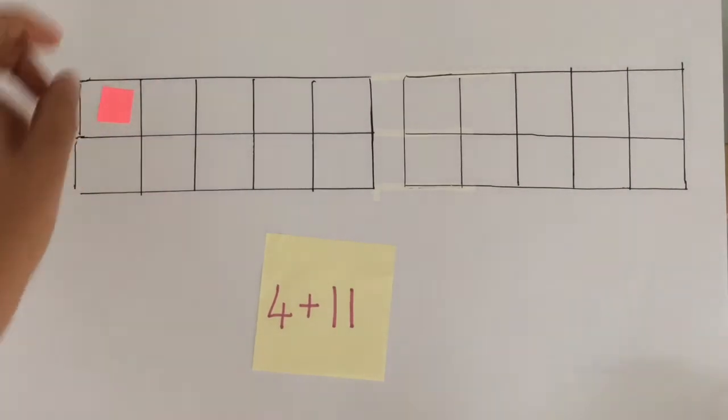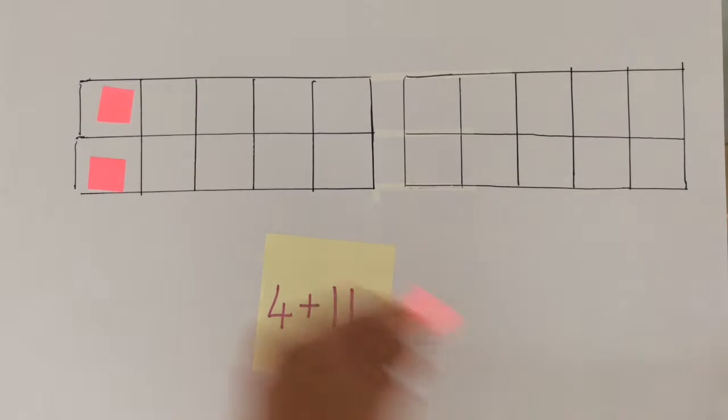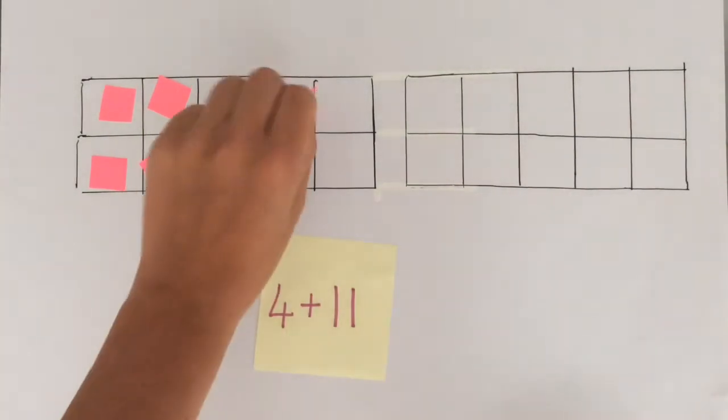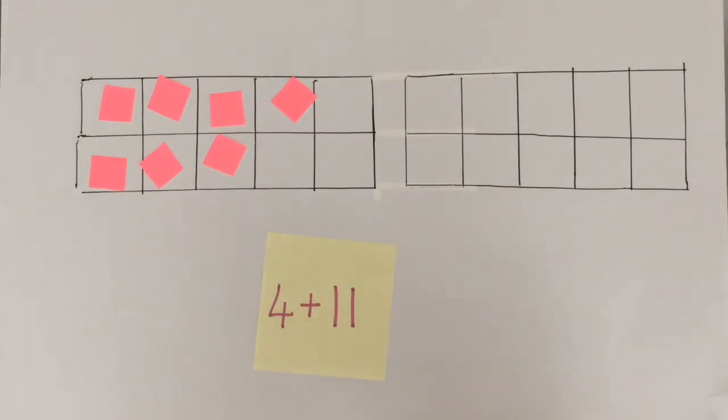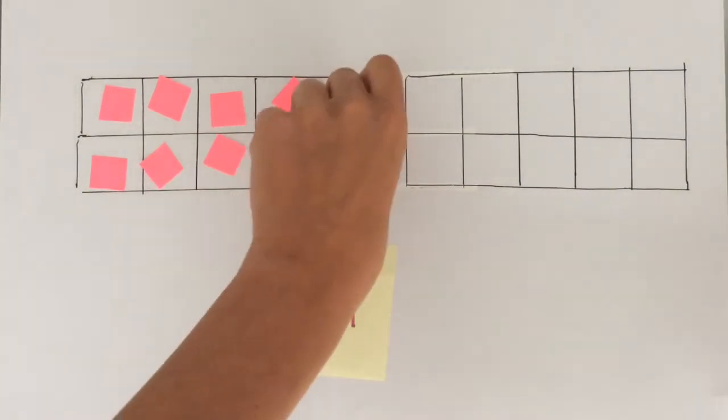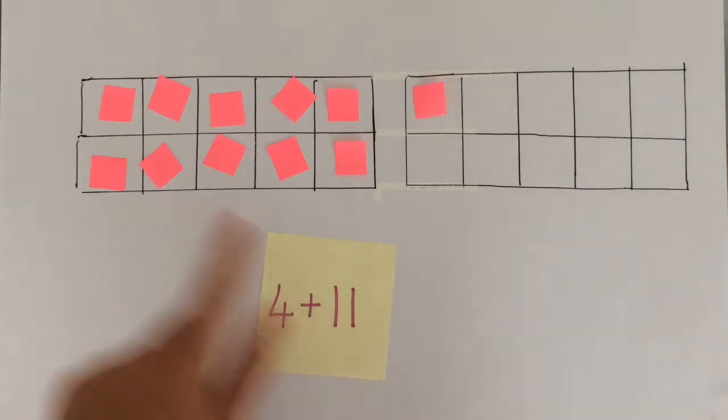Let's count 11 counters. 1, 2, 3, 4, 5, 6, 7, 8, 9, 10, 11. And then we have to add the other amount.